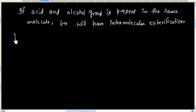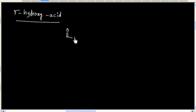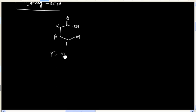For example, let us consider case of gamma hydroxy acid. So we have alcohol group at gamma carbon, so this is gamma hydroxy acid. If this is treated with acid, we will have esterification.